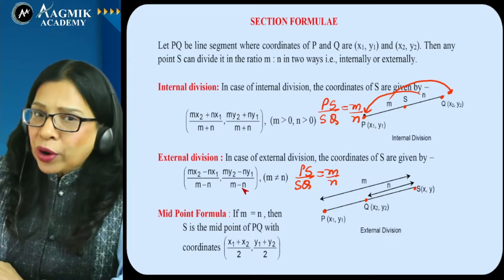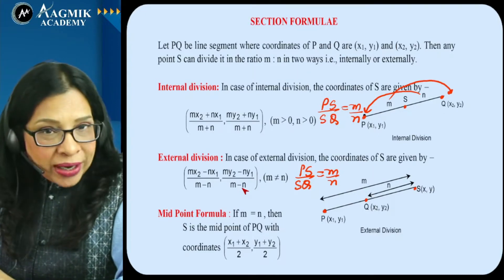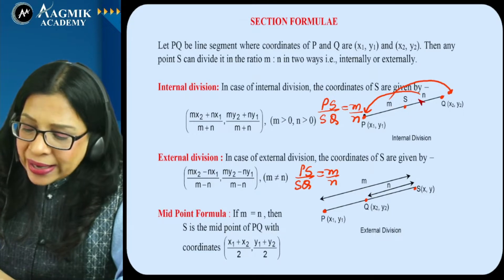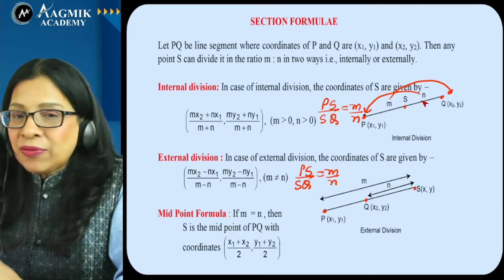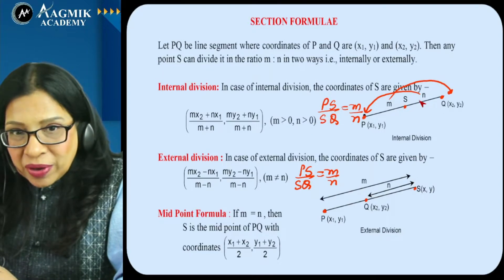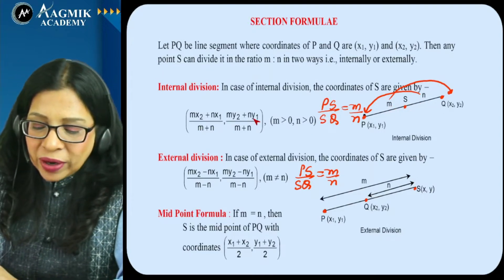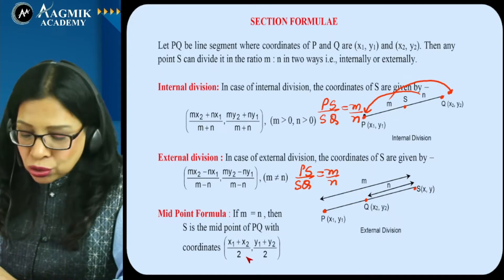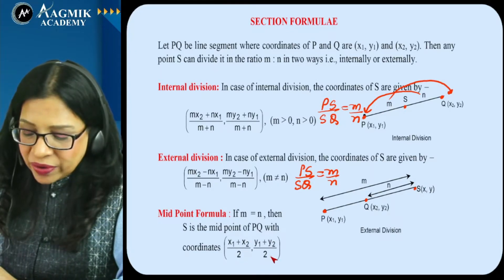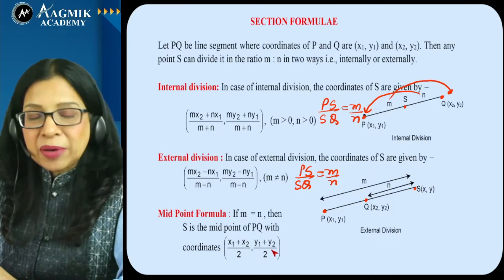For the midpoint formula: if S is the midpoint of PQ, the ratio becomes 1:1, so m and n are both 1. The coordinates become x = (x1 + x2) / 2, y = (y1 + y2) / 2. This is the midpoint formula.